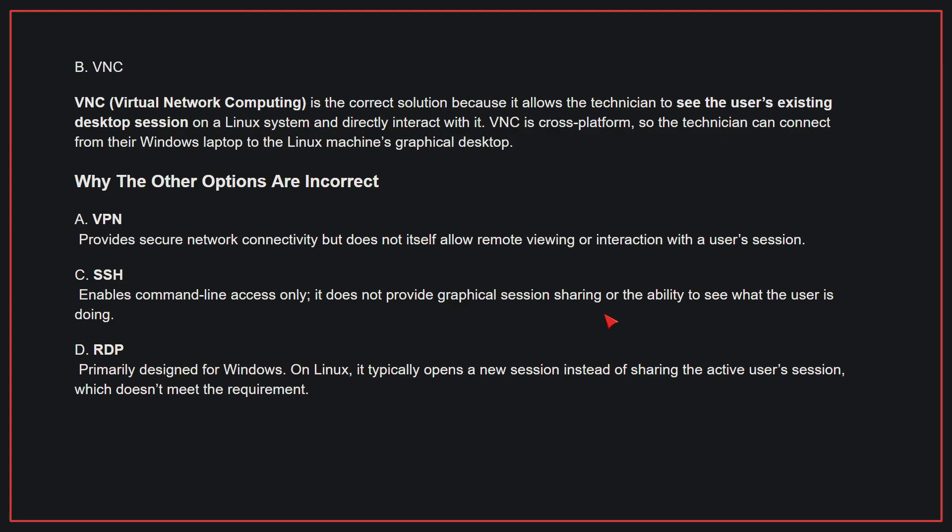Why the other options are incorrect: A, VPN — this provides secure network connectivity but does not itself allow remote viewing or interaction with a user's session. C, SSH — this enables command line access only; it does not provide graphical session sharing or the ability to see what the user is doing. D, RDP — this is primarily designed for Windows. On Linux, it typically opens a new session instead of sharing the active user's session, which doesn't meet the requirement. Therefore, the correct answer is B.